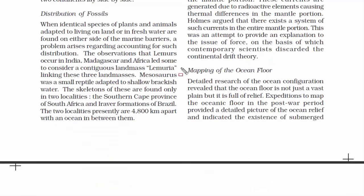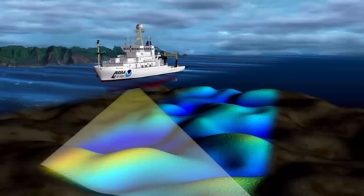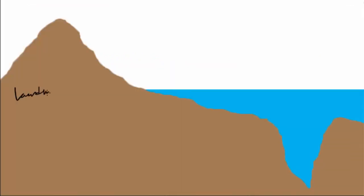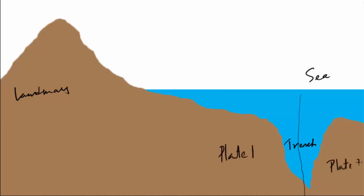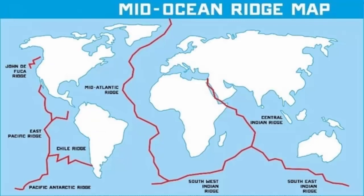Now we are going to read about mapping of the ocean floor. While mapping, scientists found that the ocean floor is not just a vast plain but is full of relief, meaning it has a similar uneven surface like we have on landmass. There are mountain ranges as well as deep trenches and valleys in the ocean bed. Trenches are deep cavities or cracks in the ocean bed, usually occurring when two continental plates move apart. There are also mid-oceanic ridges, which are long mountain ranges.